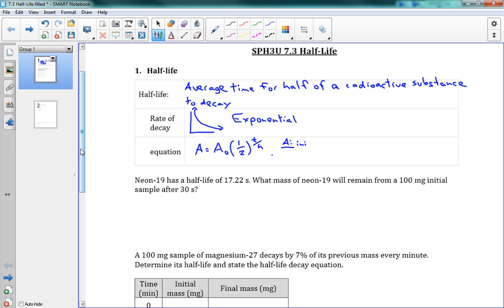So a couple things here. A is the amount of the substance remaining. A naught, this A sub zero here, this is the initial amount, how much you started with.